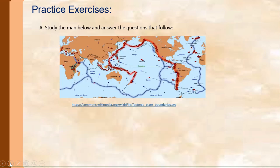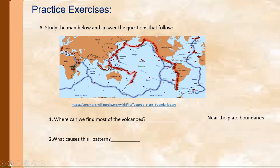To check your understanding, let's have some practice exercises. For letter A, you are asked to study the map below and answer the questions that follow. We have here a map showing the location of some mountains and volcanoes. Question number one: where can we find most of the volcanoes? The answer is near the plate boundaries. Question number two: What causes this pattern? The answer is the movement of plates.